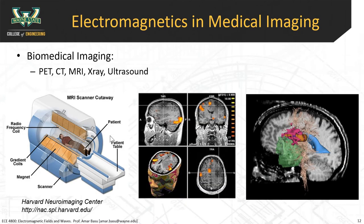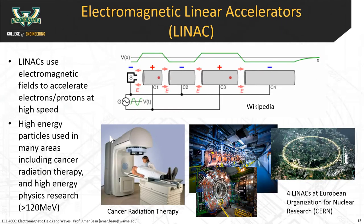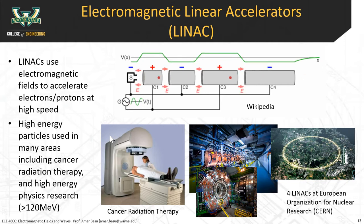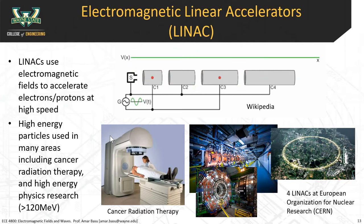We talked about medical imaging. Electromagnetic waves can penetrate through the body — through tissue or bone — and different parts respond differently, allowing images with contrast to be generated. MRI is a very big one that generates three-dimensional images of tissue, and it has really changed the game in medicine. We talked about linear accelerators, where electromagnetics accelerates particles at very high speeds for cancer radiation therapy. It's also used in high-energy particle physics research at places like CERN in Switzerland, where the Higgs boson was discovered using these high-energy experiments.